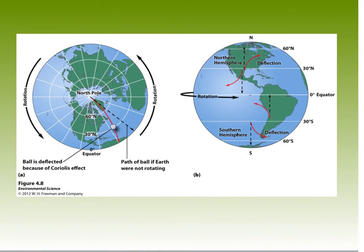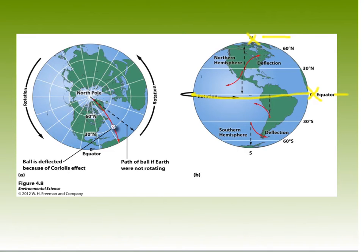The Coriolis effect is very important. The speed of Earth's rotation is faster at the equator — about 1,600 kilometers per hour — than at higher latitudes near the poles, which is about 200 kilometers per hour. If you imagine hovering above the Earth, one rotation at the equator covers far more surface area passing beneath you than at the pole. This difference in rotational speed is called the Coriolis effect.